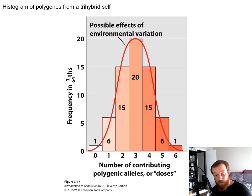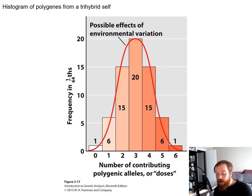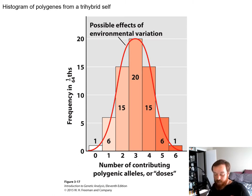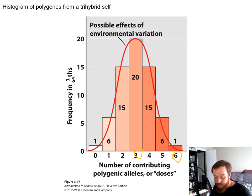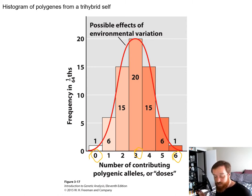If we expand this idea beyond a dihybrid cross to a trihybrid — three genes all controlling the same trait — our histogram expands. The most you can inherit is six copies of the dominant dose; the least is zero. The more genes you have, the more rounded and large the histogram gets, and the probability of landing on the extremes gets smaller and smaller.